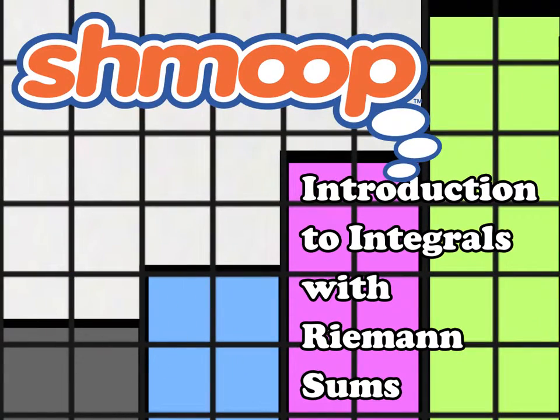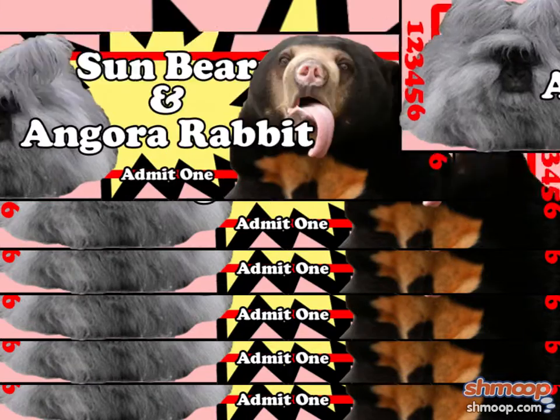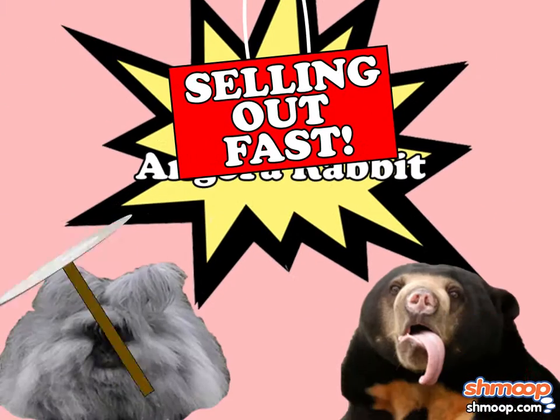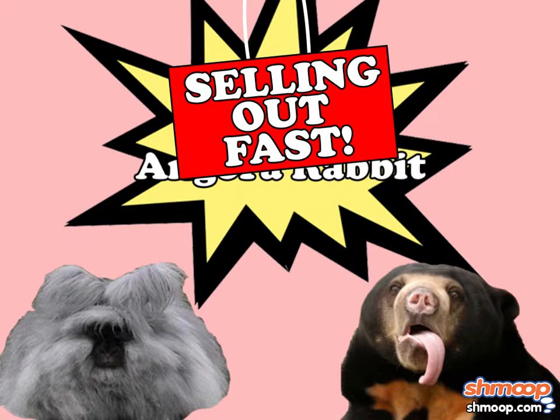Introduction to Integrals with Riemann Sums, a la Shmoop. Tickets to see the Sun Bear and Angora Rabbit are selling out fast. They don't do any tricks or anything, they're just hilarious to look at. You know, like Aunt Suzie.